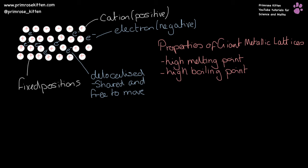A giant metallic lattice is going to have a high melting point and a high boiling point, because while these electrons are free to move around, the cations are fixed in place. The attraction between the positive ions and the negative electrons is incredibly strong.